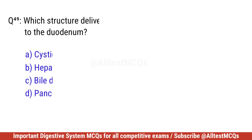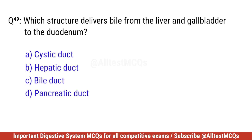Question number forty-nine. Which structure delivers bile from the liver and gallbladder to the duodenum? Correct option is C. Bile duct.